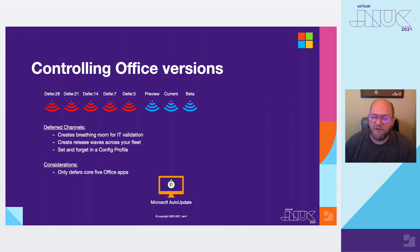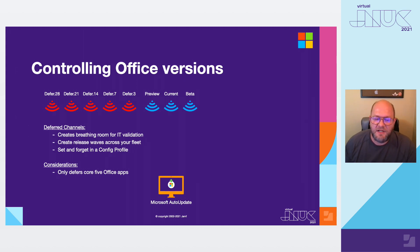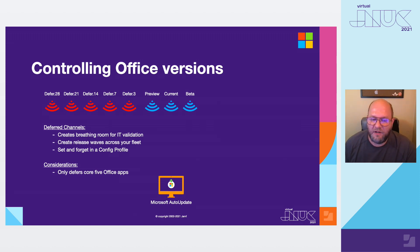Because these are configuration profile-based, you can even create release waves across your fleet. You could have a smart group or a static group where everybody in your early adopters group gets the updates three days after release, while the rest of your fleet could get it 14 days after release — so it's really flexible. What's also nice about the deferred channels is you set them and forget them. You define defer seven days and then never have to revisit that config profile again. One consideration is that this only defers the core five Office apps — Word, Excel, PowerPoint, Outlook, and OneNote. Other MAU-integrated apps such as Edge, Company Portal, and Defender will update immediately based on their release cadence to the current channel, which is typically what you want for those apps.